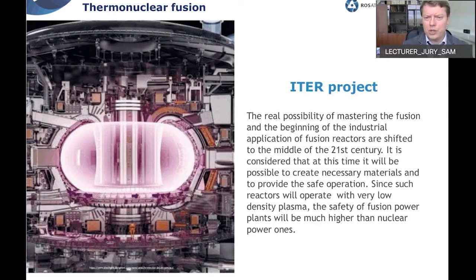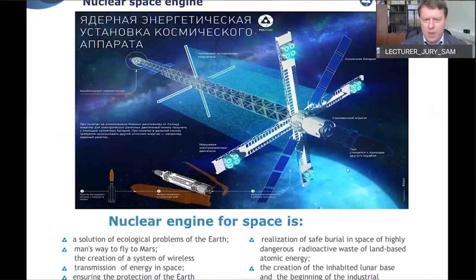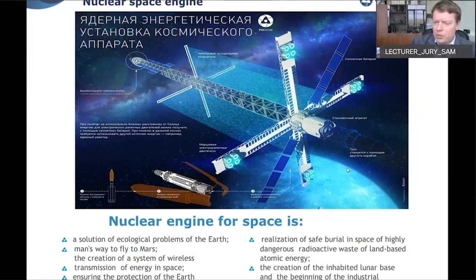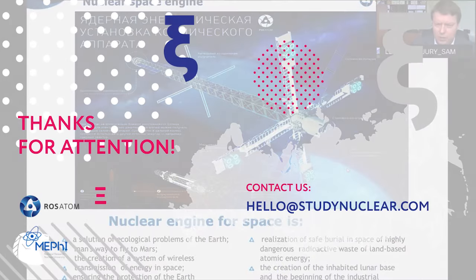If someday we start exploiting a thermonuclear reactor like the ITER project, the first requirement is hydrogen and oxygen. This hydrogen can be produced at nuclear power plants. Finally, our next lecture will be about nuclear space technology. Rosatom is leading incredible and interesting work in nuclear space technology, and you can find much information on the Rosatom website and across the internet.